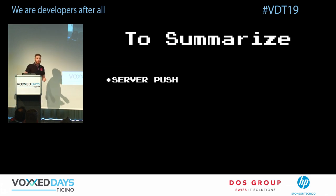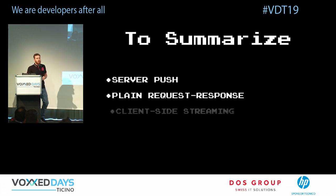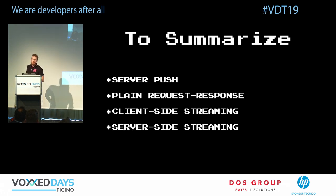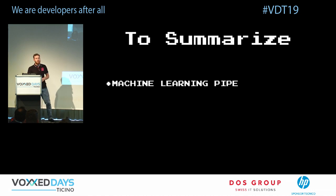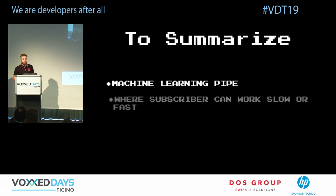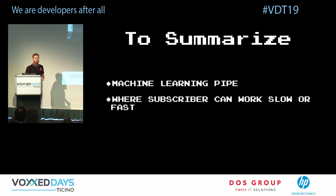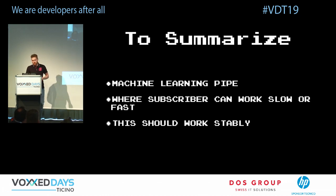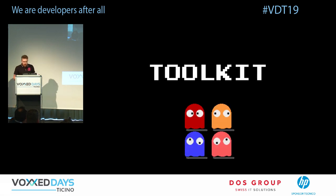To summarize quickly: we have several communication patterns — server push, request-response, client streaming, server-side streaming — plus an enterprise business model with machine learning pipeline that may work fast or slow. We have to preserve system stability because it's important for our business.